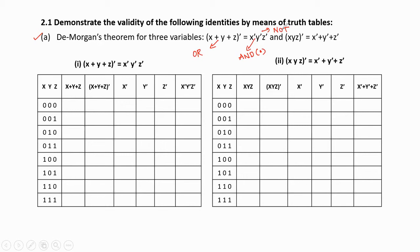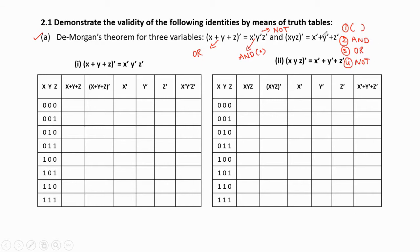To verify these theorems with the help of truth tables, we should follow the priority of operations. The priorities are: first, parenthesis (bracket part); second, AND operation; third, OR operation; and fourth, NOT operation or complementing operation. We have to follow these priorities to simplify these expressions using truth tables.